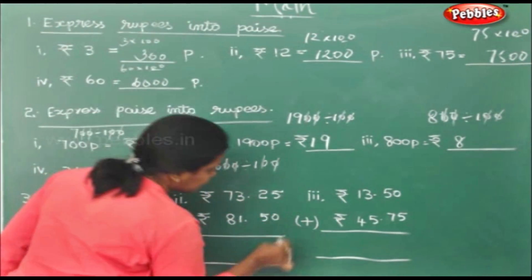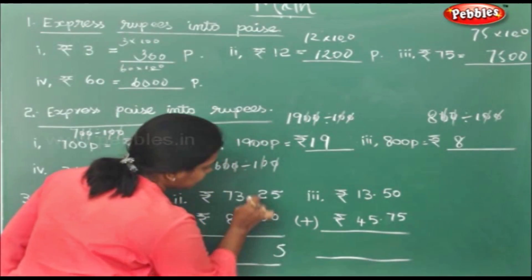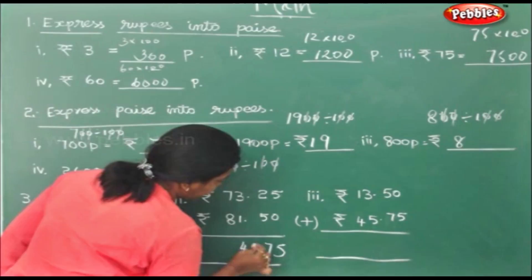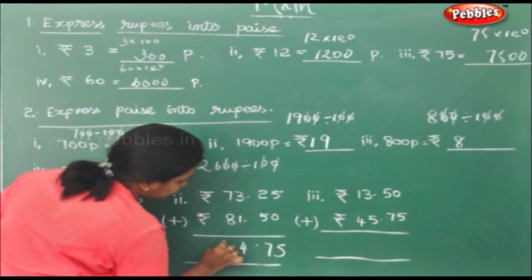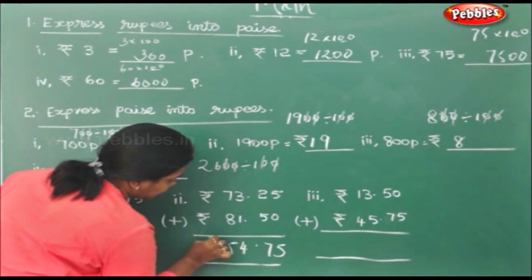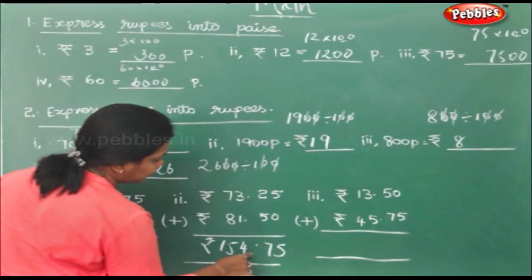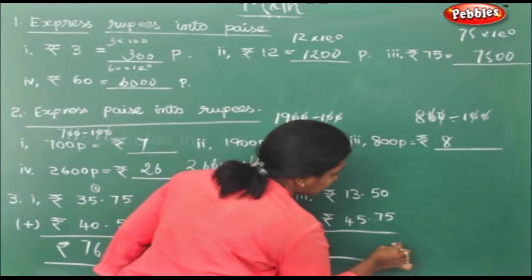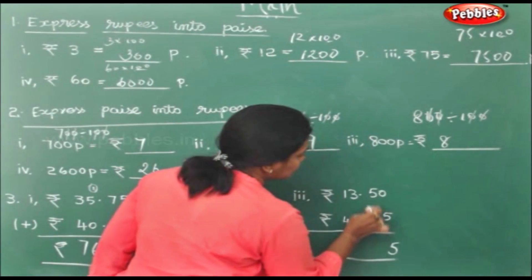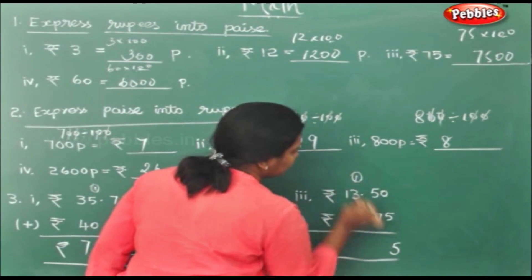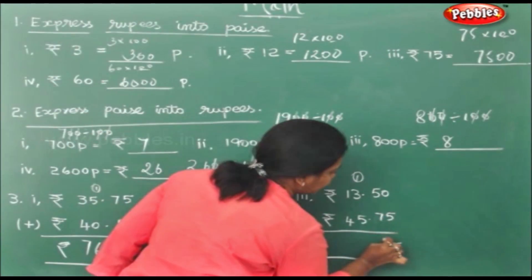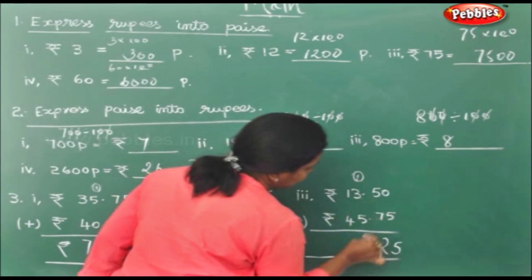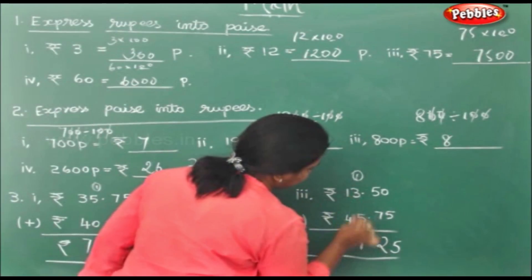Here, 5 plus 5 is 10. 7 plus 5 is 12. 5 plus 1 is 6. 6 plus 3 is 9. 4 plus 1 is 5.